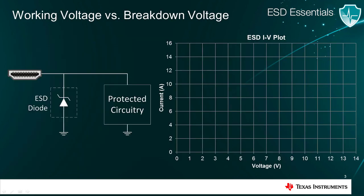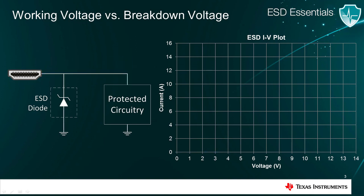First, let's take a look at how an ESD diode responds during normal operation. The graph on the right-hand side shows the current voltage response of the diode. When the interface signal is passing through the system, the ESD diode is effectively invisible, and no current passes through it. However, when an ESD strike occurs, the voltage across the diode exceeds a certain threshold known as the breakdown voltage, and the diode begins to conduct and shunt current to ground.